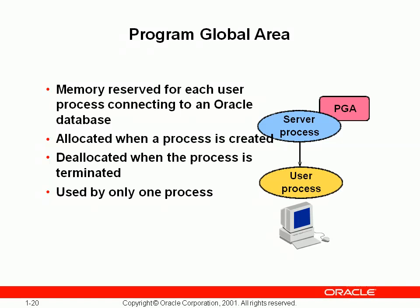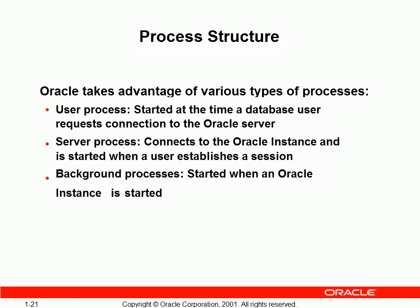When done, the process must be terminated to avoid any deadlock on a database. A user process is created when requesting a connection. A server process is created when a session is established. A background process is started when the instance is started and ready for processing requests. Both user and server processes are in the System Global Area, while background processes are in the Program Global Area.